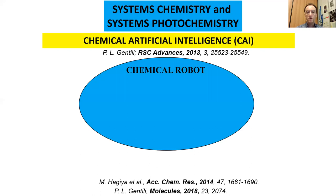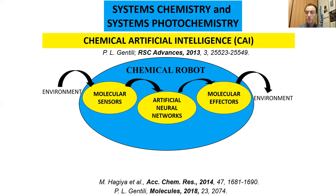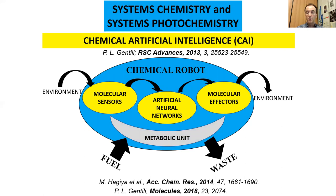More specifically, we are devising modules for futuristic chemical robots. The chemical robot is used as a molecular assembly that reacts autonomously to its environment through molecular sensors. It makes decisions by its intrinsic artificial neural networks and performs actions upon its environment through molecular effectors. The intelligent activities of a chemical robot should be sustained energetically by a metabolic unit.